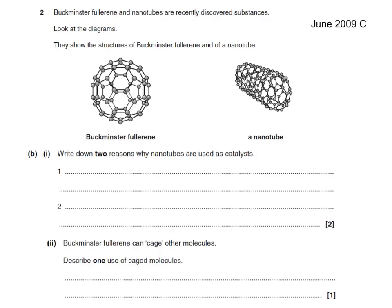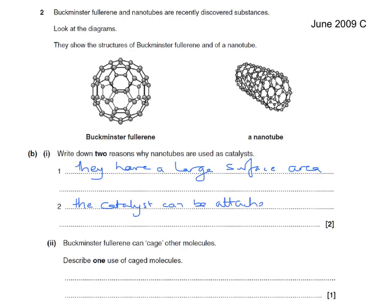Here's another past paper question. Buckminster fullerene and nanotubes are recently discovered substances. Look at the diagrams showing their structures. Write down two reasons why nanotubes are used as catalysts. The first reason is that they have a large surface area, and the second reason is that the catalyst can be attached to the surface. Buckminster fullerene can cage other molecules - describe one use of caged molecules. Drug delivery systems would do here.